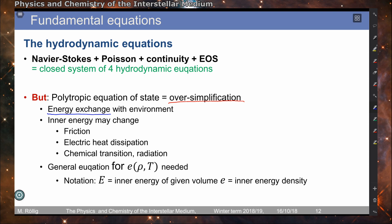We might have electric heat dissipation when we have currents, for example when charged particles move through a magnetic field. This might introduce additional heat dissipation via radiation. We might have radiation entering our fluid volume element, introducing additional energy because the radiation is absorbed. And we might have chemical reactions that either absorb energy (endoenergetic) or release energy (exoenergetic) to the interstellar medium.